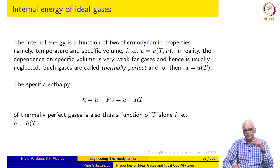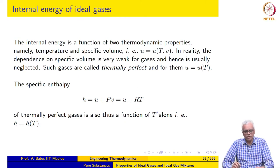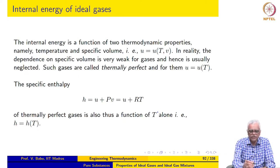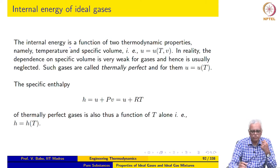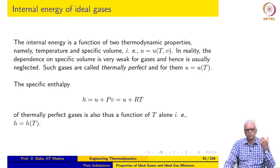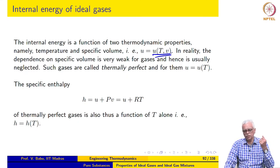Recall that when we wanted to calculate the change in total energy of a system, the only thing we needed to figure out was how to calculate change in internal energy. So that is what we look at next — internal energy of ideal gases. Recalling the two-property rule, the state of a thermodynamic system consisting of a simple compressible substance is determined by two properties. So internal energy is a function of two thermodynamic properties: temperature and specific volume.